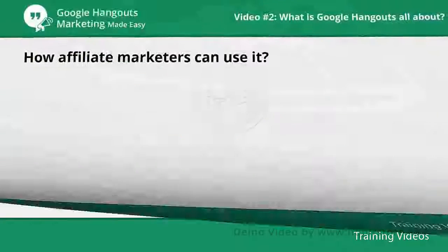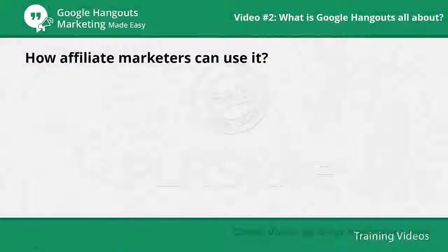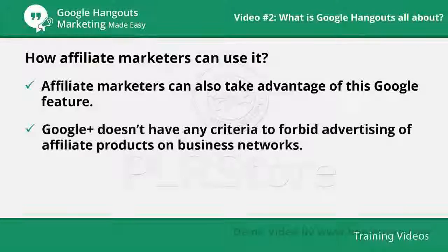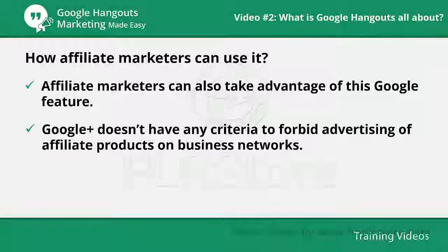Google Hangout is another way of promoting your products on Google Plus and other social media sites. Affiliate marketers can also take advantage of this Google feature to create promo videos, webinars, demo videos, get ideas for writing ebooks, and email autoresponders. Google Plus doesn't have any criteria to forbid advertising of affiliate products on business networks, so affiliates can get more exposure for their promotional content.